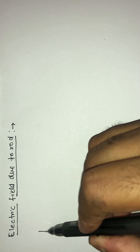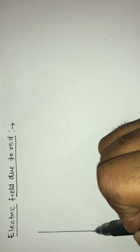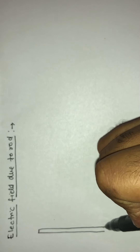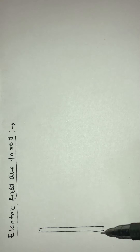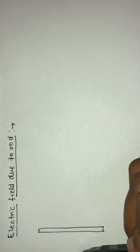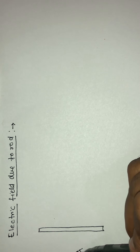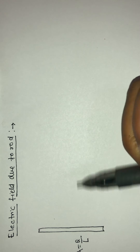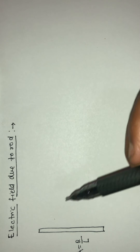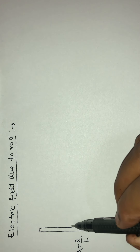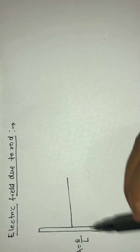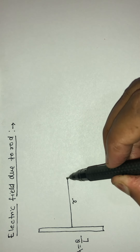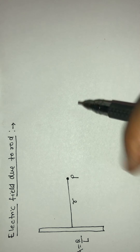This is one rod. The length of this rod is L and the linear charge density of this rod is given as lambda. So lambda is equal to Q divided by L — charge per unit length. At a distance R from this rod, at point P, I need to find out the electric field.